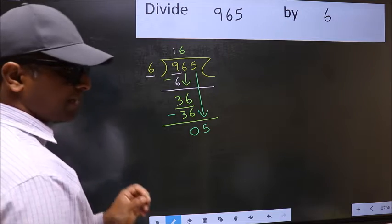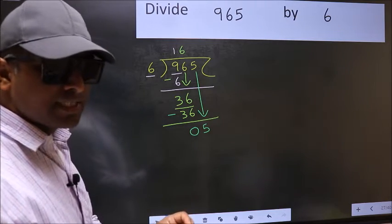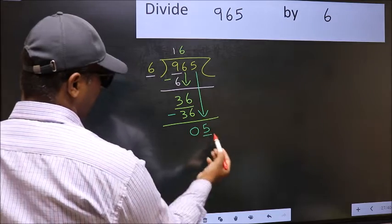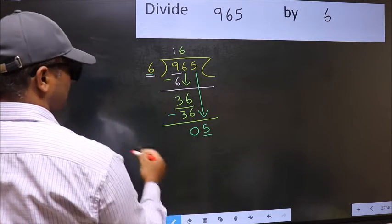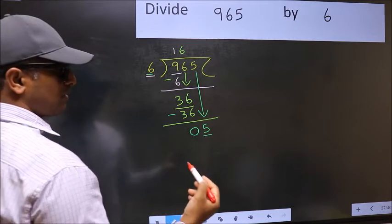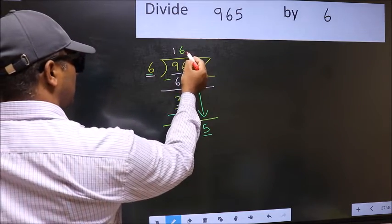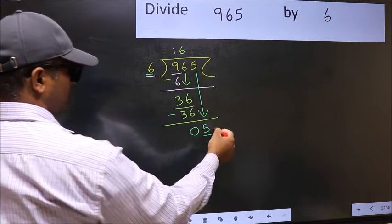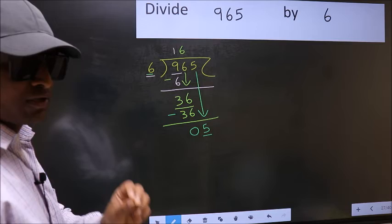After this step, the mistake happens. And the mistake is this. Here we have 5 and here 6. 5 is smaller than 6. So what many do is they directly put a dot and take 0, which is wrong.